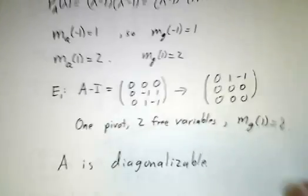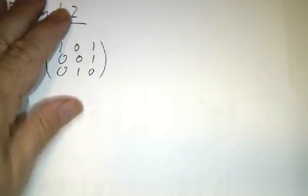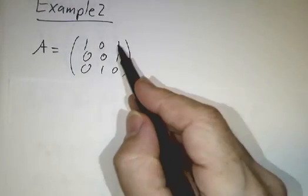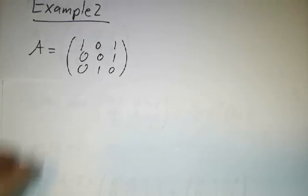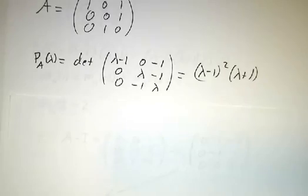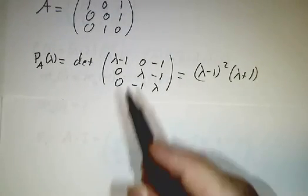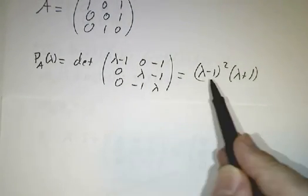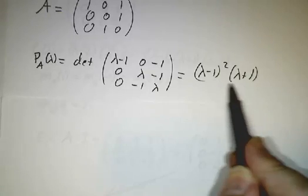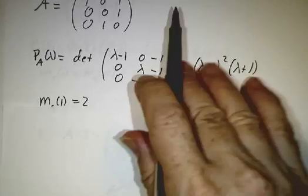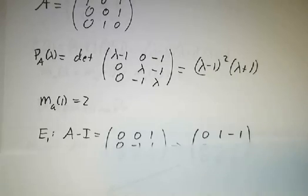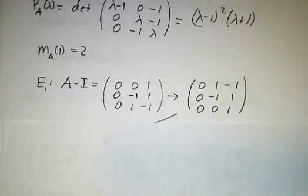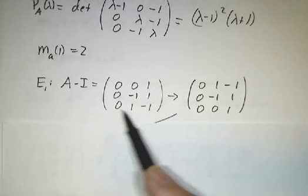In our next example, it's just like the first example, except over here in this corner, instead of putting a 0 here, I've put a 1 there. That doesn't change the characteristic polynomial. The characteristic polynomial still winds up being exactly the same as before. So the algebraic multiplicity of 1 is 2. And now if we go about figuring out the geometric multiplicity, take A minus the identity, and that's this matrix.